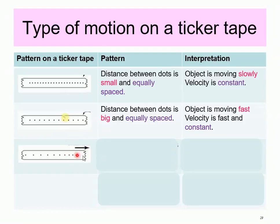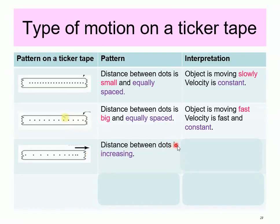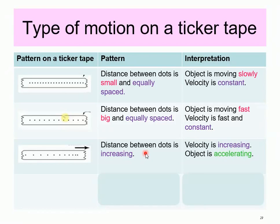As you can see over here, there's an arrow pointing here showing that this beginning part is actually the beginning of the ticker tape. The trolley is pulling the ticker tape towards the right-hand side. Initially, the dots are close to each other, and as time passes, they get bigger and bigger. So the interpretation of the pattern: the distance between the dots is increasing, from small distance to bigger distance. The interpretation for this diagram is velocity is increasing — the object is accelerating. Because the initial velocity is actually smaller than the final velocity, it is accelerating.